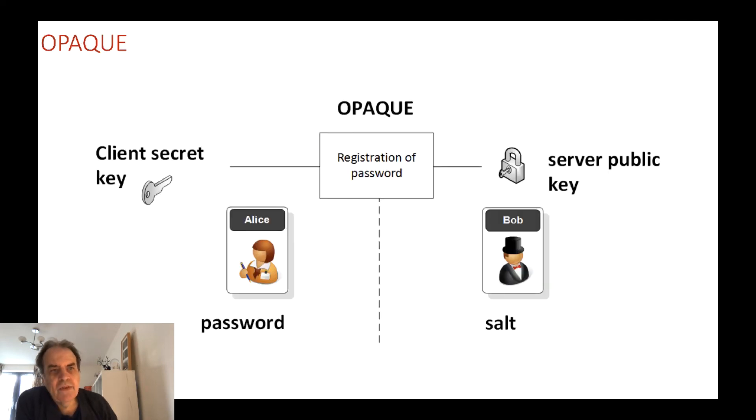But obviously in this part here it is possible for Bob to see Alice's secret. With OPAQUE what we have is a client secret, such as a password for Alice, and then we have a secret on the server, in this case a salt or some sort of key which identifies Alice. Then we have a registration of the password and after that we have authenticated access between Alice and Bob.